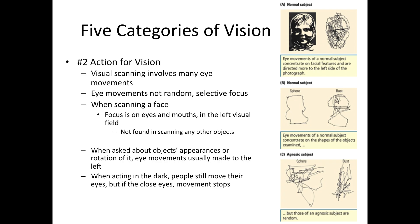The second category is action for vision — don't confuse it with vision for action. Action for vision is a top-down process where the viewer actively searches for parts of targets and objects to attend to them selectively. When we look at a visual stimulus, we do not simply stare at it. We scan it with many tiny eye movements, focusing on small sub-parts of the stimulus — kind of like scanning a barcode. These movements are not random; they tend to focus on important and distinct features.